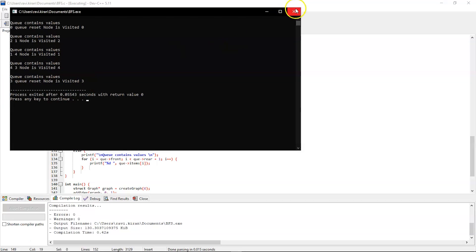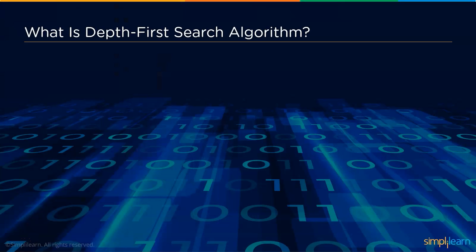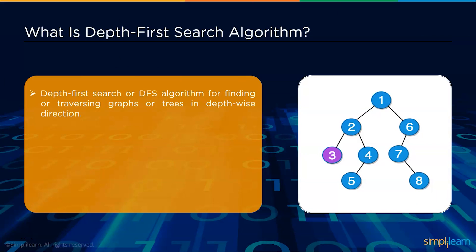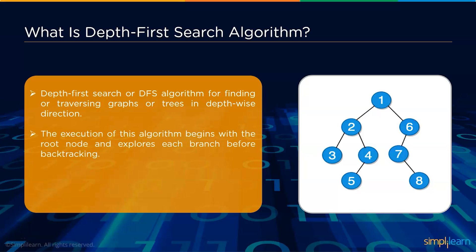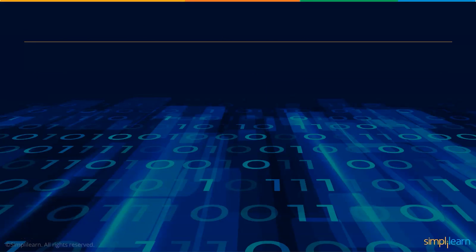Now let's move to depth-first search algorithm. DFS is used for traversing trees in a depth-wise direction. Execution begins with the root node and explores each branch before backtracking. DFS uses a stack data structure to remember the next vertex to visit when a dead end appears at any iteration — whereas BFS uses a queue.